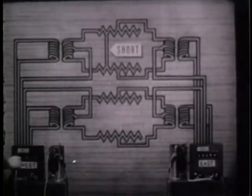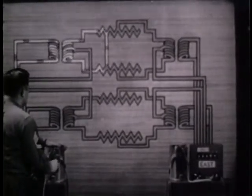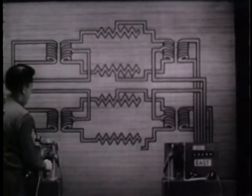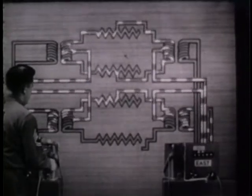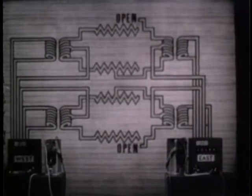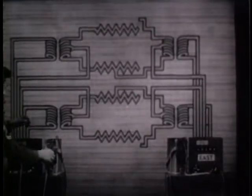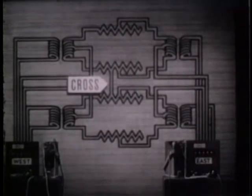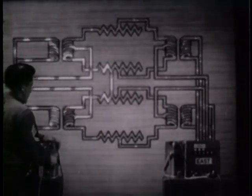A short on a side circuit affects only that circuit. An open in one wire of a side circuit causes mutual interference between the side circuit and the phantom. When both side circuits are open, all three circuits interfere with each other. When the two side circuits are crossed, all three circuits interfere with each other, especially at the transmitting end.